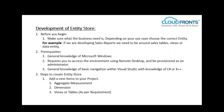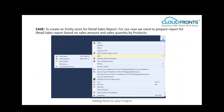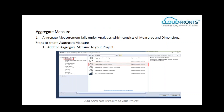Steps to create an entity store: you need to add three main items into your project — Aggregate Measure, Dimensions, and Views or Tables depending on your requirement. For our use case, we need to create an entity store for a retail sales report — specifically, a report for retail sales based on sales amount and sales quantity by products. Aggregate measures are numbers which can be aggregated, counted, or distinct. In our case, sales amount and sales quantity are the measures. Aggregate measure falls under analytics, which consists of measures and dimensions.